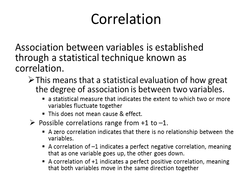Possible correlation ranges from positive one to negative one. A zero correlation indicates no relationship between variables. A correlation of negative one indicates a perfect negative correlation — as one variable goes up, the other goes down. For example, if you exercise one hour a day, your weight will likely go down. A correlation of positive one indicates a perfect positive correlation, meaning both variables move in the same direction. For example, if you have a chocolate milkshake every day instead of exercising, your weight will probably increase.